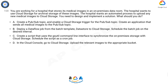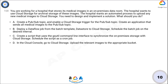C: Create a script that uses the gsutil command line interface to synchronize the on-premises storage with Cloud Storage. Schedule the script as a cron job. D: In the Cloud Console, go to Cloud Storage and upload the relevant images to the appropriate bucket.